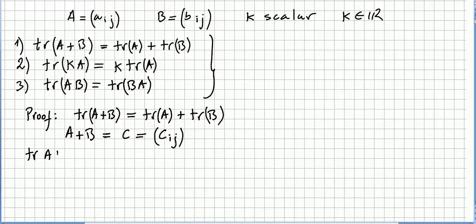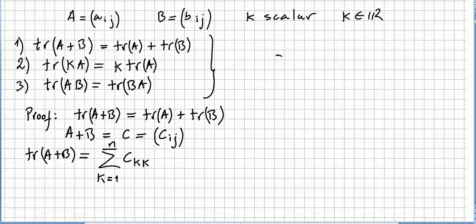What is the trace of A plus B? The trace of A plus B will be the sum of C_kk along the diagonal — please check the previous videos for this — where k goes from 1 to N. So for a 3 by 3 matrix you will be adding those 3 diagonal entries, which is why we have C_kk.